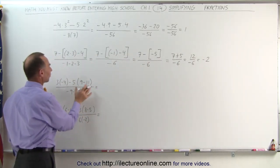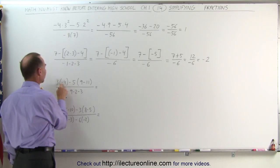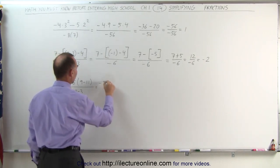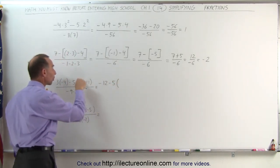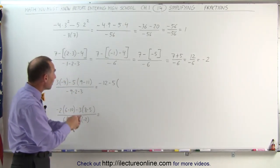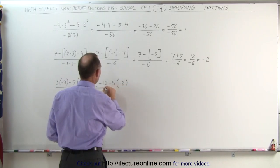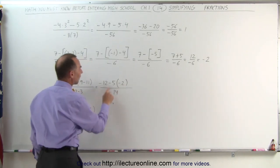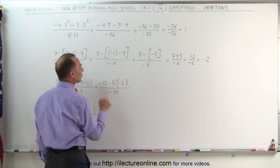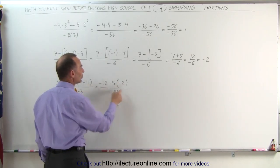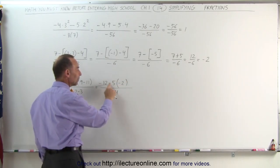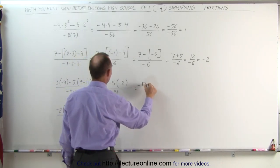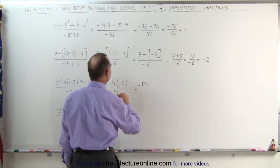In the next example, we have some parentheses — but this one is just there to shield the negative sign from the multiplication. So this is simply 3 times negative 4, which is negative 12. Minus 5 times — and here you have to work out what's inside the parentheses first: 9 minus 11 is minus 2. In the denominator, minus 9, minus 2, minus 3 together is minus 14. We're not going to simplify anything yet because there's still a subtraction in the numerator.